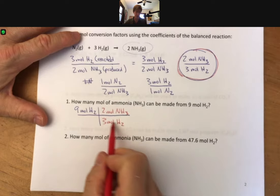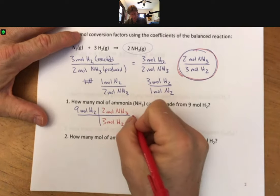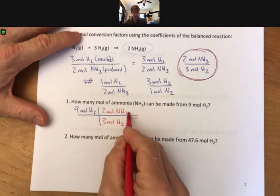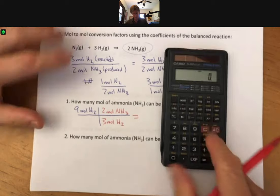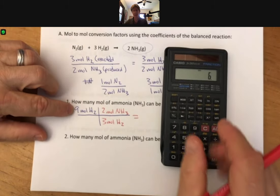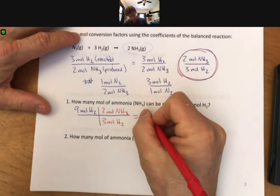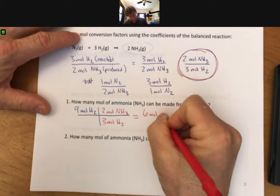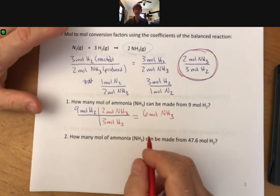And we can see that our moles of hydrogen cancel out, leaving us with moles of ammonia. And then we multiply the numbers across the top, divide by the numbers on the bottom. Nine times two divided by three. Indeed, we do get six moles of ammonia.